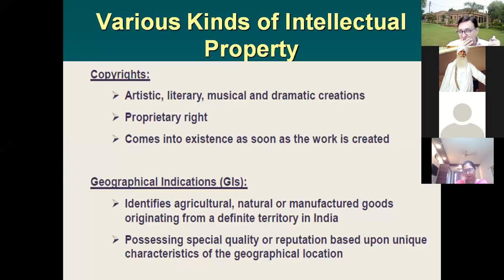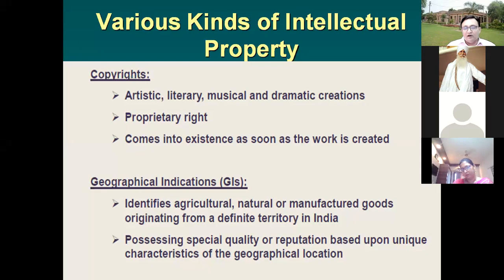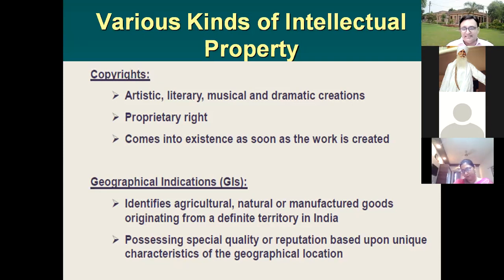Copyright proprietary rights come into existence as soon as the work is created — it is not necessary to register under the Copyright Act, but it is beneficial to do so, as it may otherwise be difficult to prove authorship. Geographical indications identify agricultural, natural, or manufactured goods originating from a definite territory in India. For example, Kashmir has certain famous products; Assam tea and Darjeeling tea have specialities attributed to their place of origin. The special ingredients processed based on unique features of a particular area define them as geographical indications.